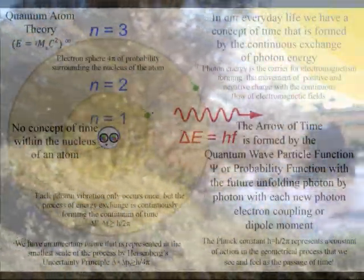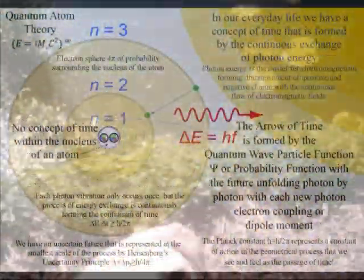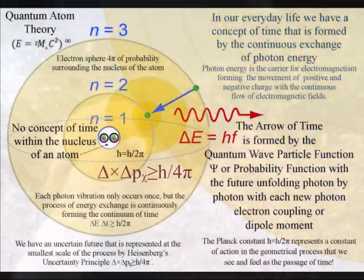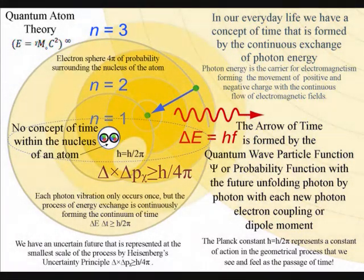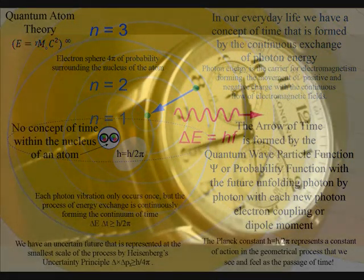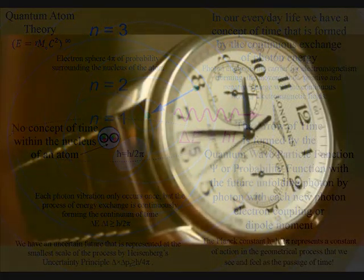In this theory the mathematics of quantum mechanics represents the physics of time as a geometrical process of energy exchange. With the classical physics of Newton's differential equations representing processes over a period of time.